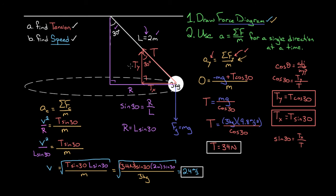To recap, when solving a sophisticated centripetal force problem: draw a quality force diagram, then use Newton's second law for a single direction at a time, plugging in only forces along that direction. If the direction lies along the centripetal direction — pointing toward the center of the circle — use v²/R for centripetal acceleration. Make sure you understand that R is the radius of the circle the object is actually traveling in, not the length of the string.